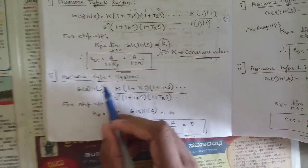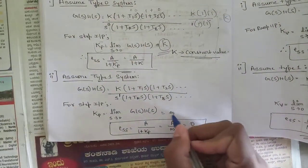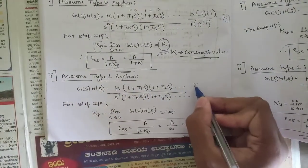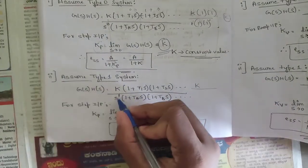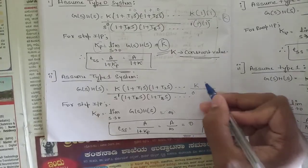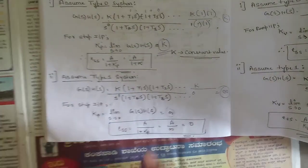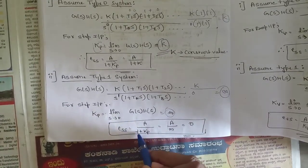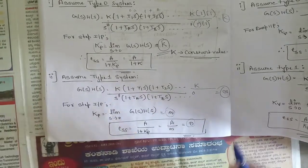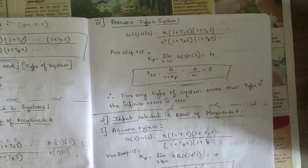For a Type 1 system with step input, j = 1, so we have s¹ in the denominator. Evaluating Kp = lim(s→0) G(s)H(s), the numerator gives K but the denominator has s → 0, so Kp = K/0 = ∞. Therefore ess = A / (1 + ∞) = A/∞ = 0. Similarly for Type 2 (j = 2), Kp is again infinity and ess = 0.